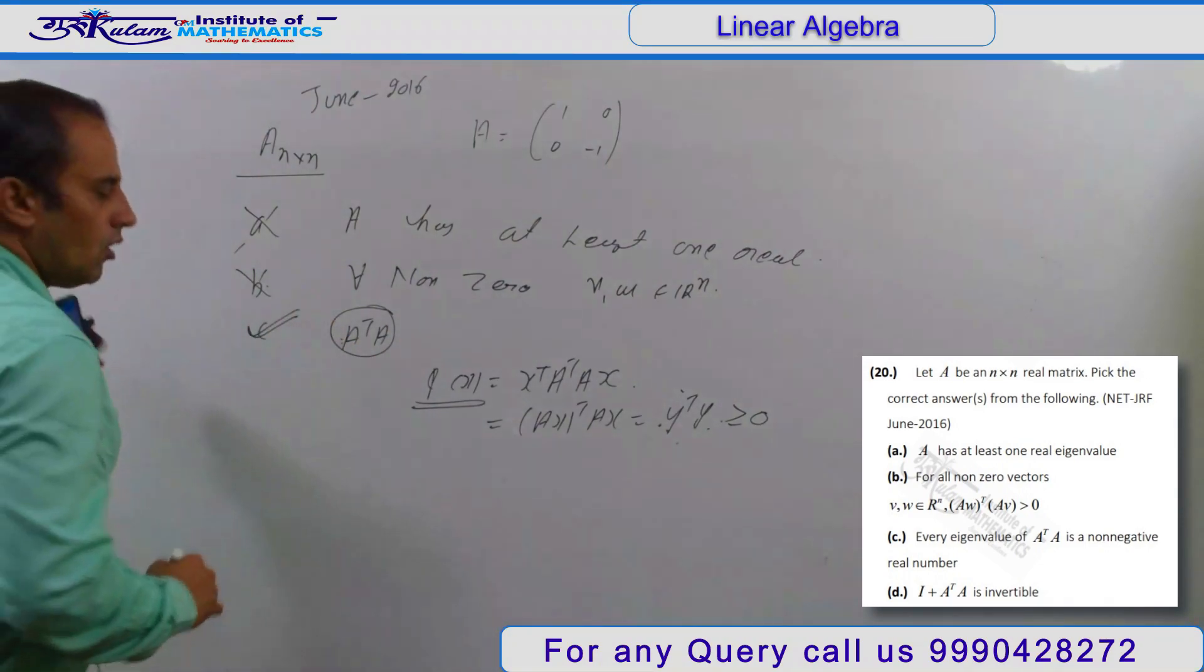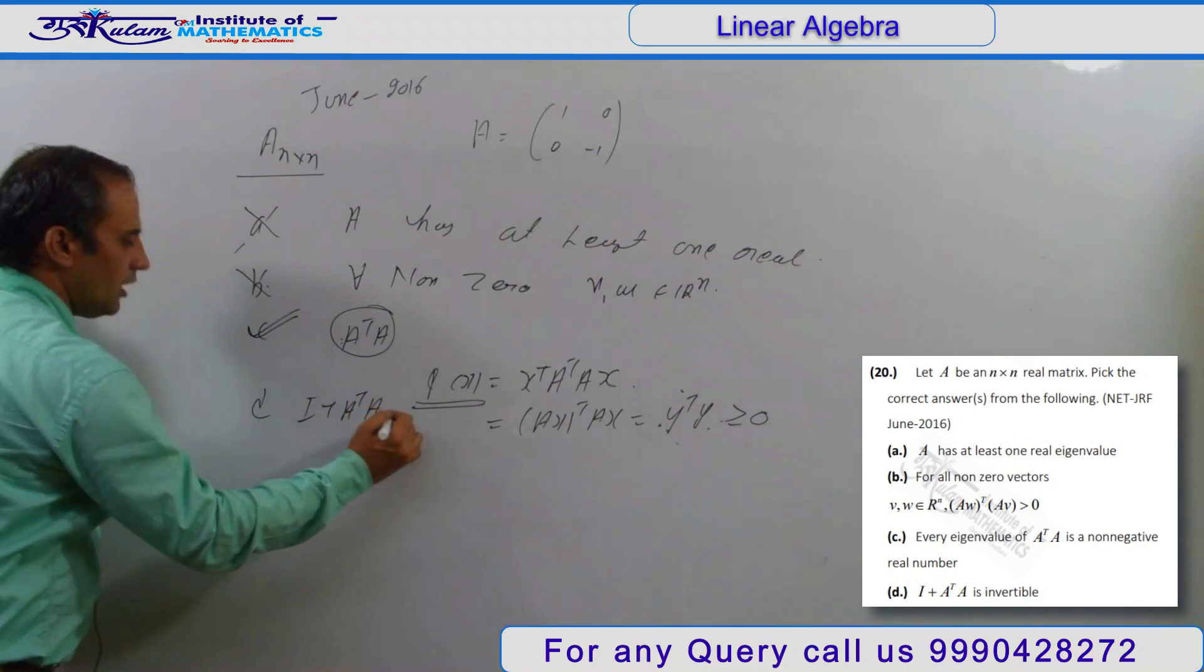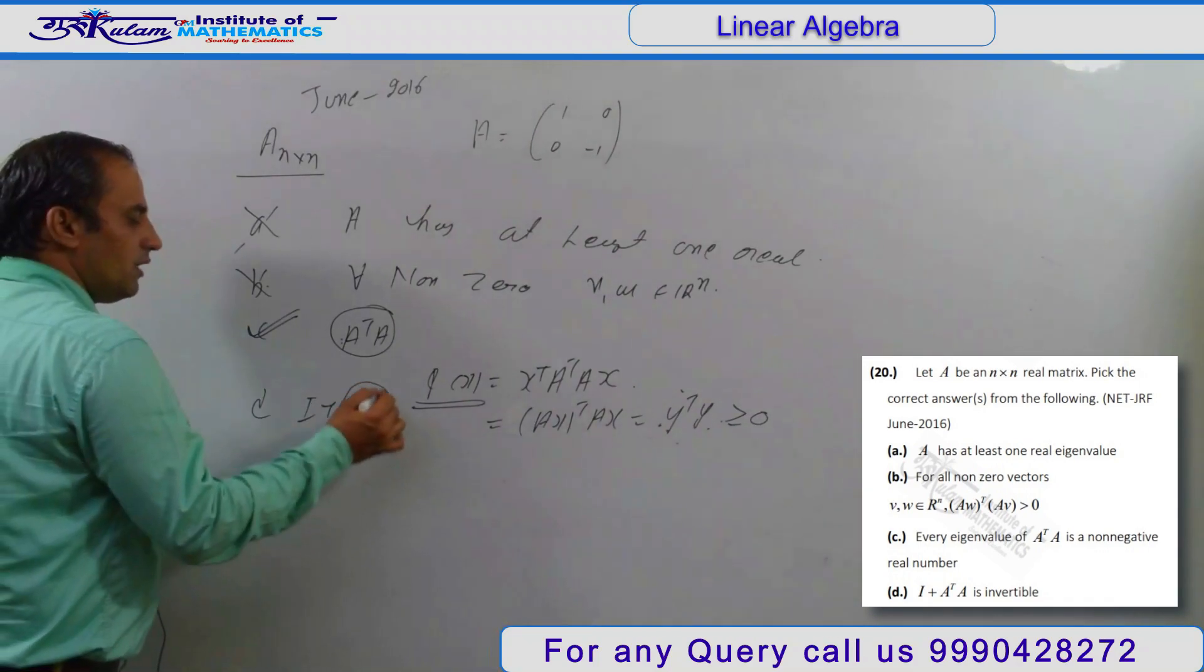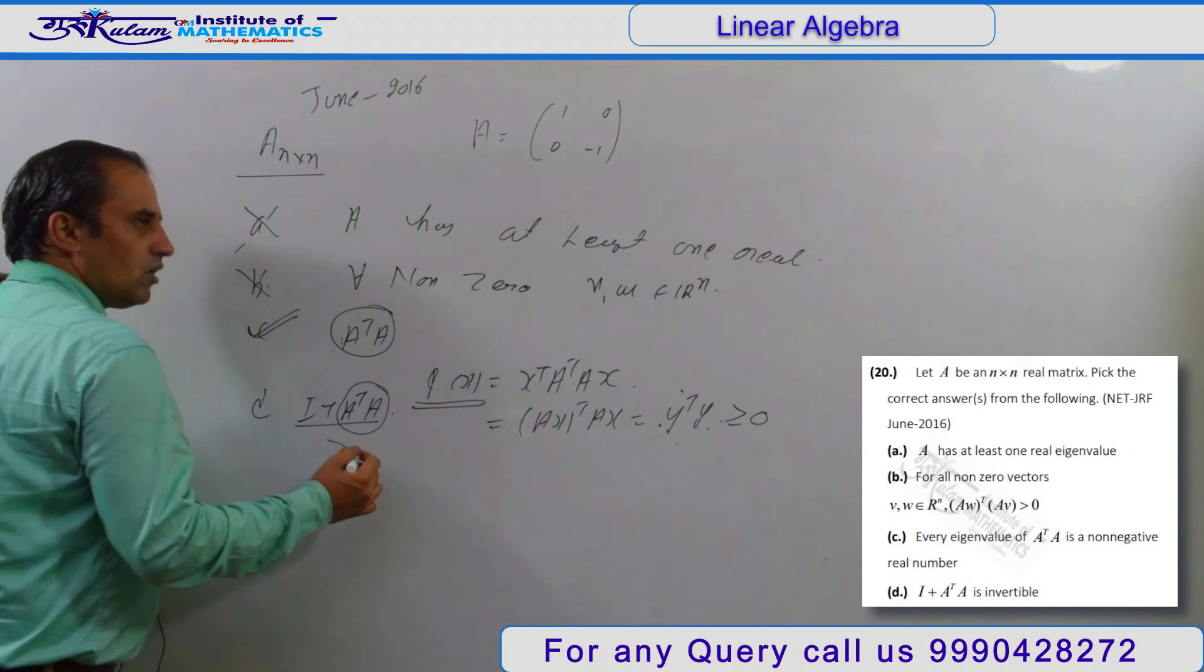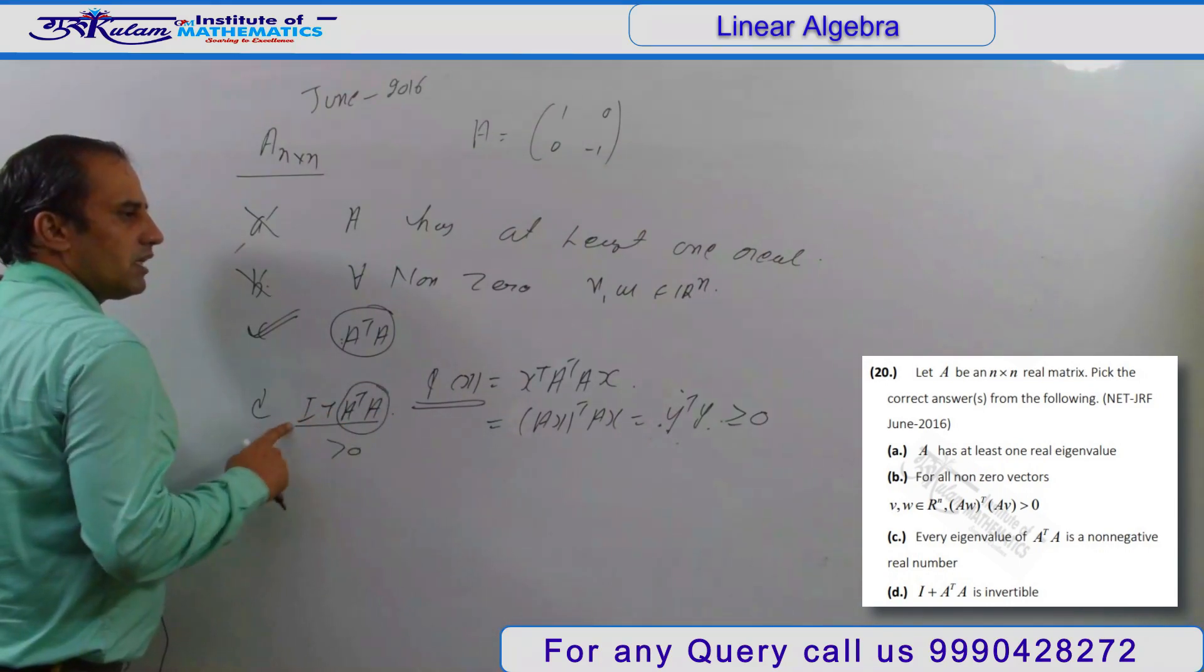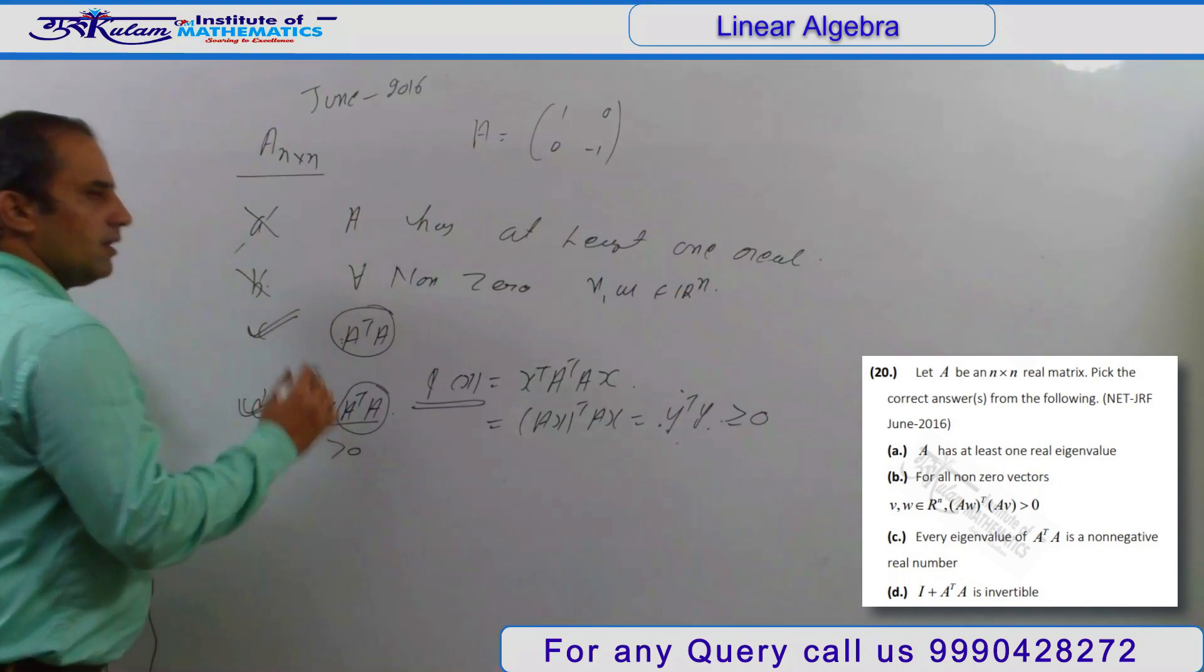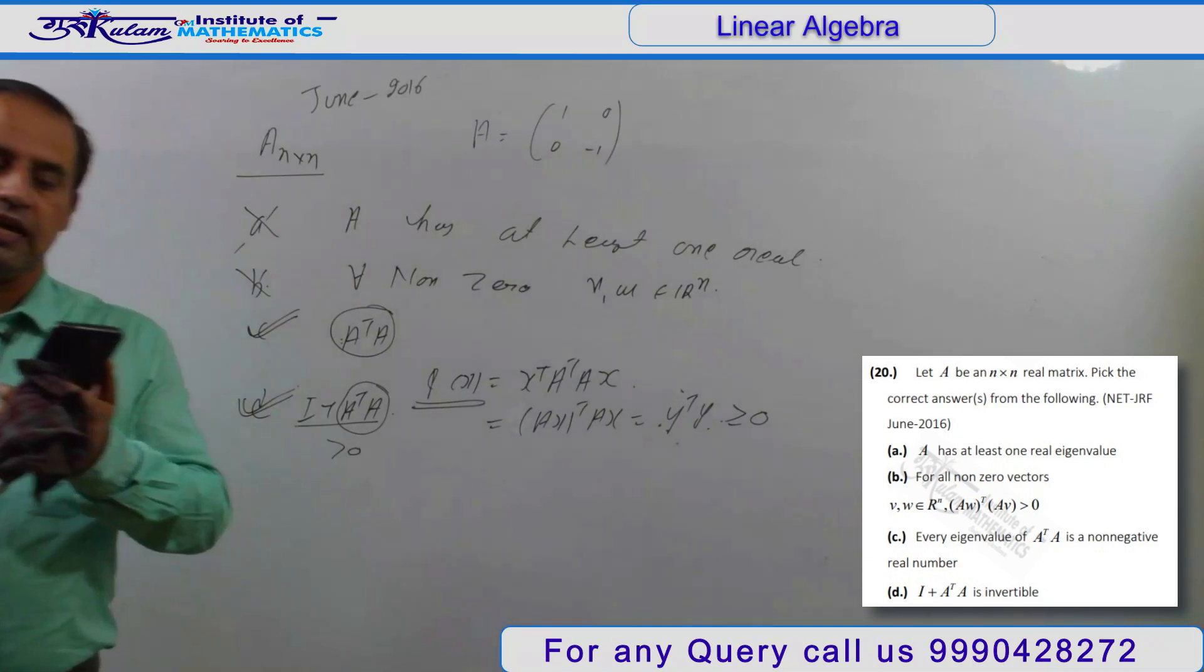Option D talks about I plus A transpose A. Since the eigenvalues of A times A transpose are non-negative, the eigenvalues here will be positive. All eigenvalues positive, symmetric matrix means determinant is non-zero. So this should be invertible. D option is also correct.